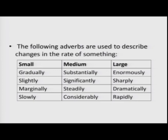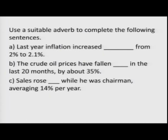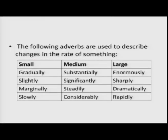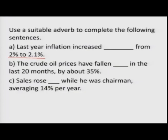In these sentences, read carefully and supply an adverb. First: 'Last year, inflation increased blank from 2 to 2.1 percent.' This is a very small change, so from the list we can use 'marginally' — 'Last year, inflation increased marginally from 2 to 2.1 percent.' Second: 'The crude oil prices have fallen blank in the last 20 months by about 35 percent.' A 35 percent fall is huge, so we can use 'sharply' — 'The crude oil prices have fallen sharply in the last 20 months by about 35 percent.'